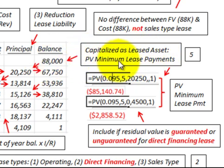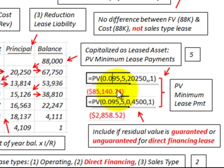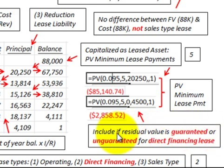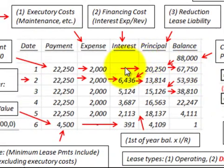The present value of the minimum lease payments is $88,000, calculated by discounting the $20,250 annual payments back five years at 9.5%, which gives $85,140, plus discounting the $4,500 residual value back five years, which gives a present value of $2,858. Adding those together gives the capitalized lease asset amount of $88,000. Importantly, the residual value must be included regardless of whether it's guaranteed or unguaranteed for a direct financing lease.